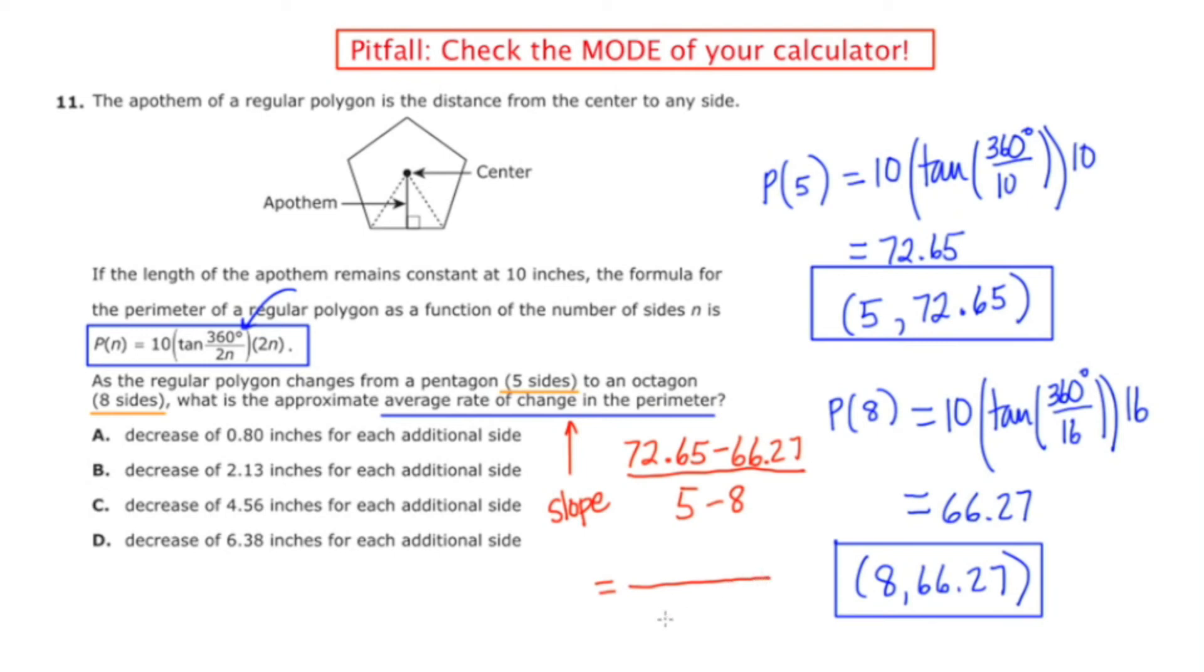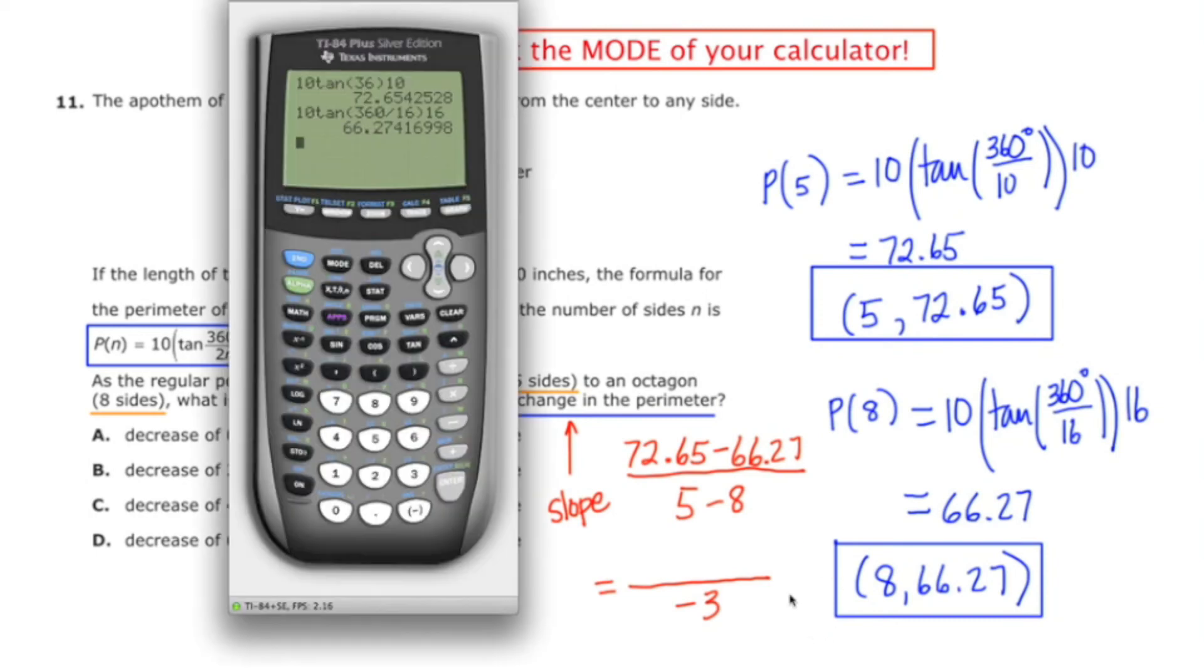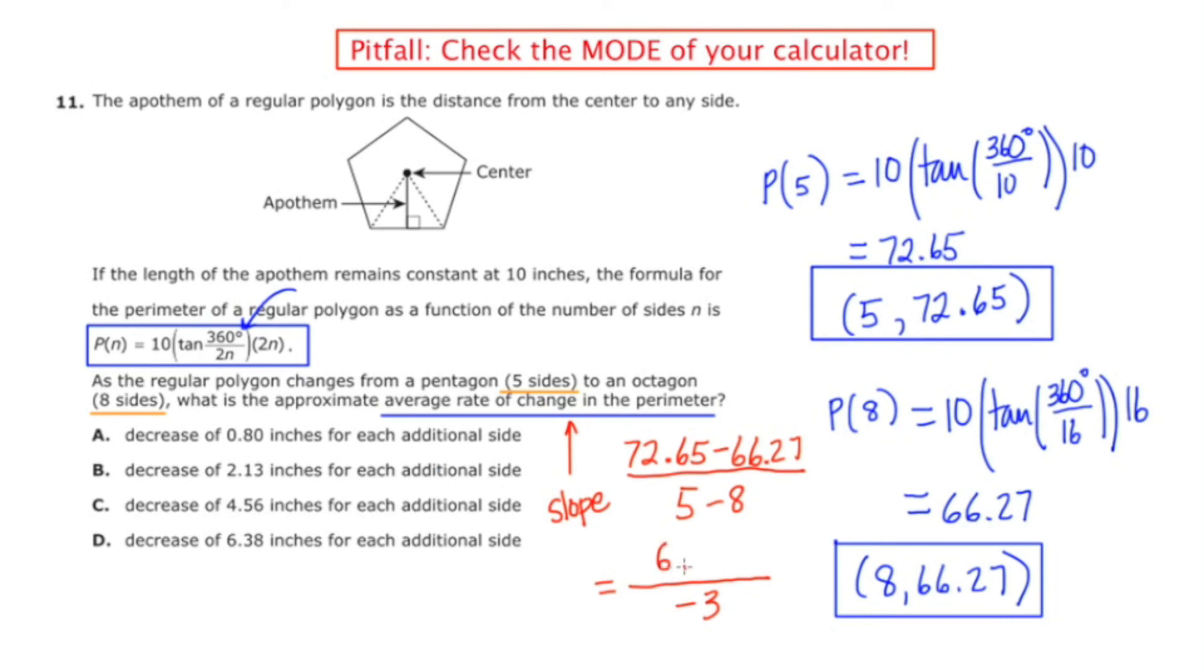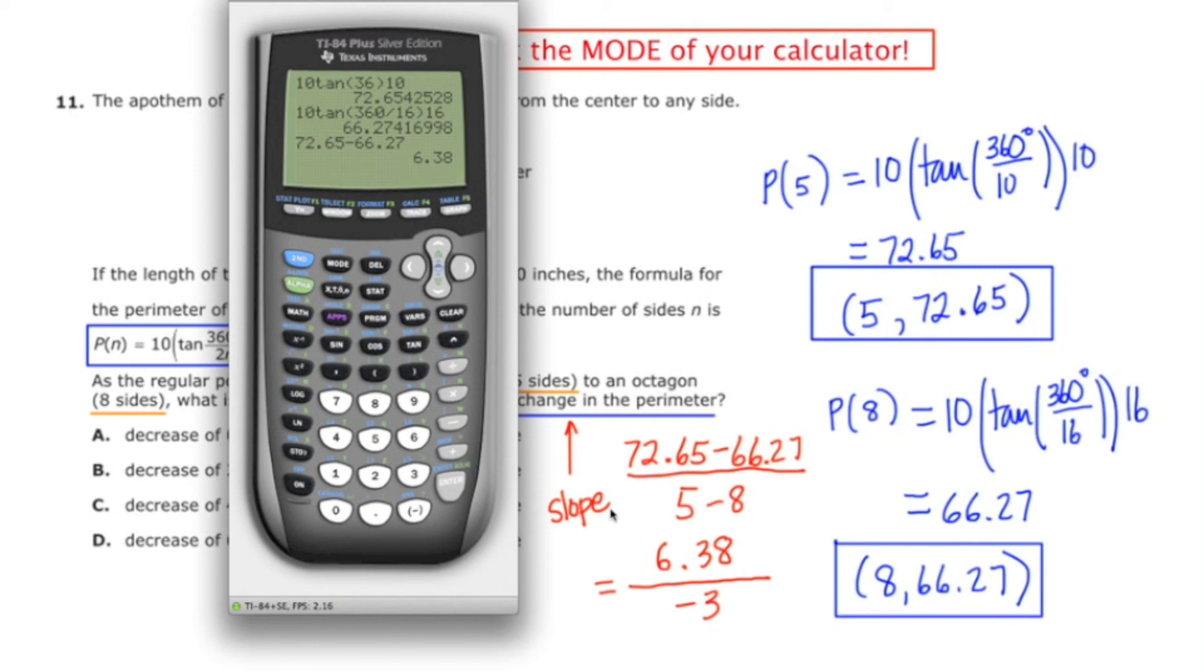Now I know the denominator for that is going to be negative 3, because 5 minus 8 is negative 3. And now I'm going to grab the calculator again to do the subtraction of those decimal numbers. So I'm going to do 6.38 divided by negative 3.